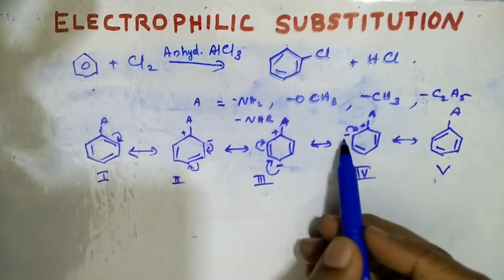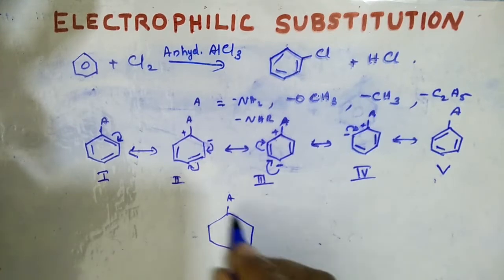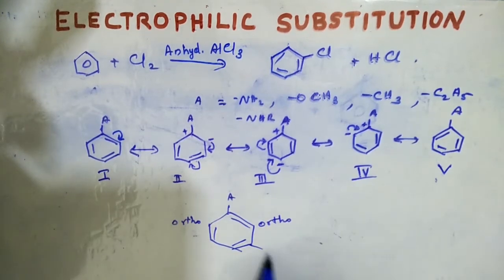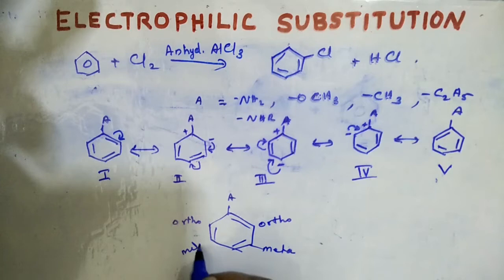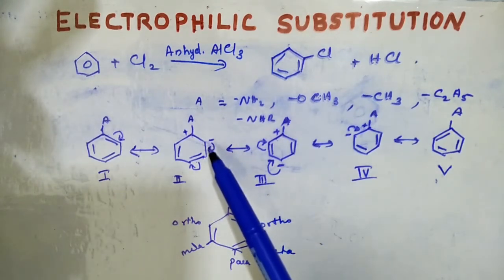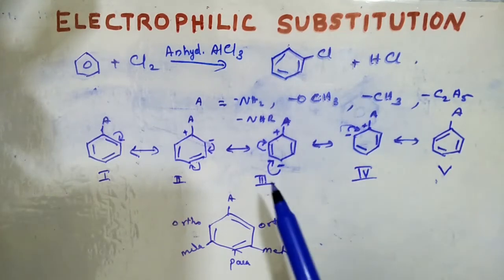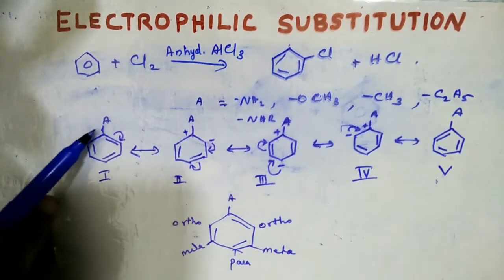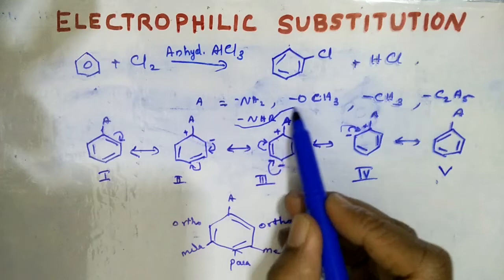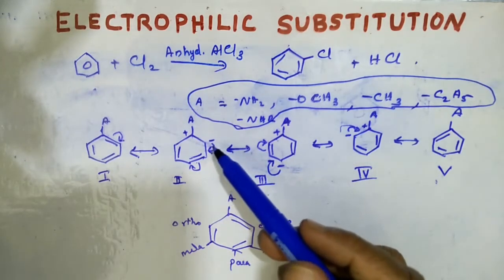The fourth resonating structure also shows ortho position. For a benzene ring with a monosubstituted product, the positions are: ortho (two of them), meta (two of them), and para. So you are getting electron-rich positions at the ortho positions and the para position. Electron density is concentrated in ortho and para positions when an activating group is present in the benzene ring.